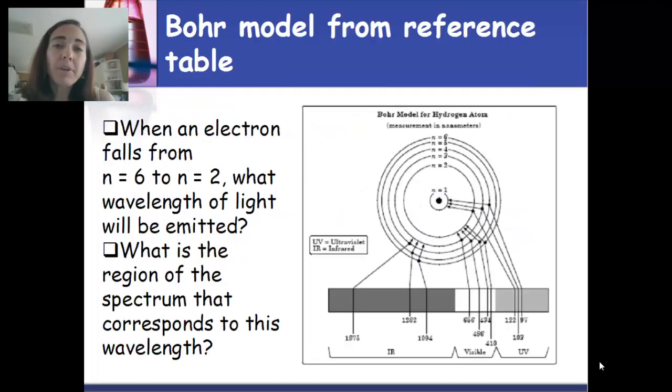So here's that picture of the Bohr model from your reference table. Let's work a sample problem. On the left side here, it's asking you to look at an electron that's falling from n equals 6 to n equals 2. Now what you're going to do there is find the n equals 6 ring on the model and find the dart arrow that corresponds to the electron falling to n equals 2. Can you find it? It's down here in the bottom right hand corner and it corresponds to a wavelength of 410 nanometers. So that's the answer to the first question. From n equals 6 to n equals 2 is a wavelength of 410 nanometers.